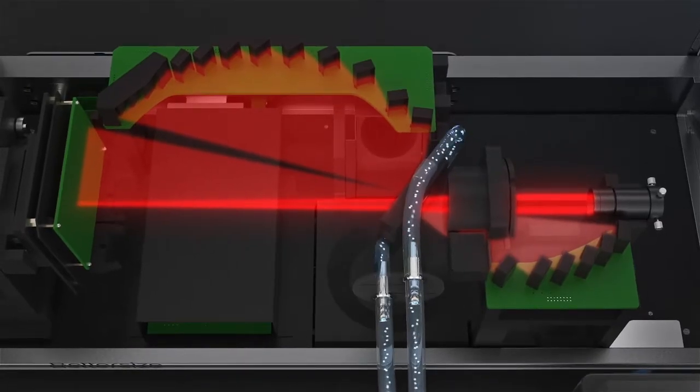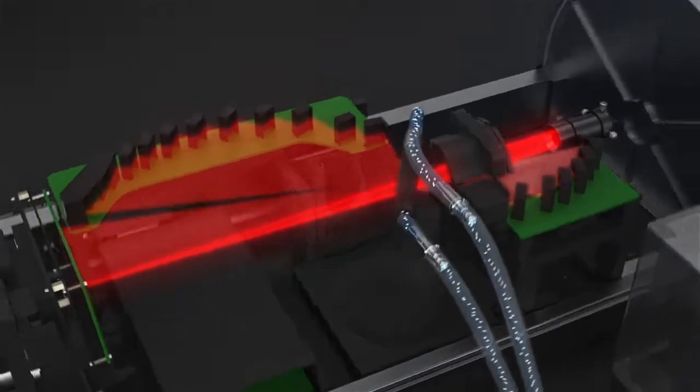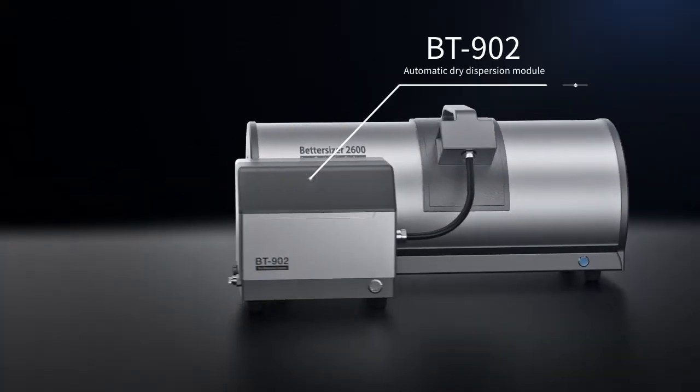The spherical detector array further ensures sizing accuracy. With the help of the BT-902 automatic dry dispersion module, particle size measurements are easy and reliable without the use of solvent.